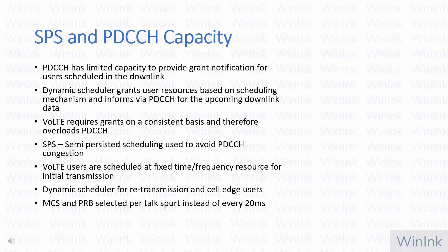This situation is avoided by using SPS, where the PDCCH message for the grant is sent only at the start and stop of the SPS session. The gain from the dynamic scheduler is absent in SPS, but we can have some frequency hopping. MCS and PRB are also used per talk spurt, which further reduces PDCCH congestion.